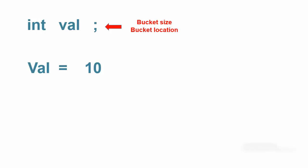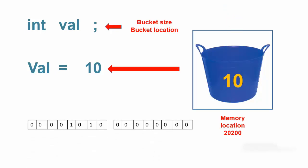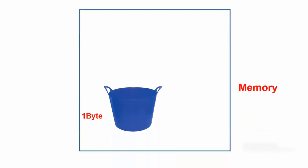The second statement means that we go to variable val's bucket location at memory address 20200 and pour two bytes of data into the bucket with the data arranged in such a pattern as to form the value 10. This figure also shows a one byte bucket stored at memory location 20000 with a minus sign character stored in it.